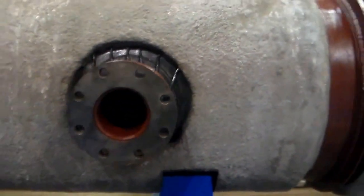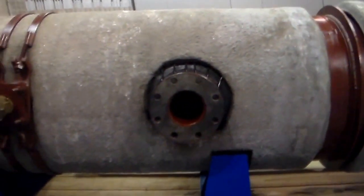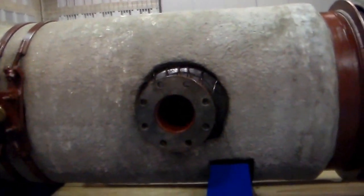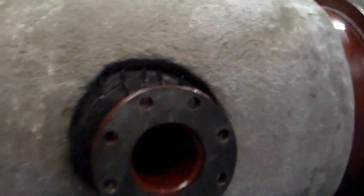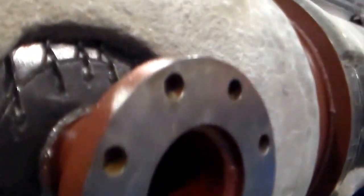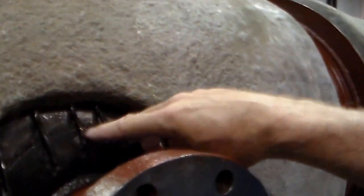The next pipe over, this is the bar wrap pipe, AWWAC 301 bar wrap pipe, which you notice here has a mortar coating. The flange is the ability with bar wrap to add a flange in the field. Notice this is rod and not pre-stressing wire. And we'll go around to the other side.